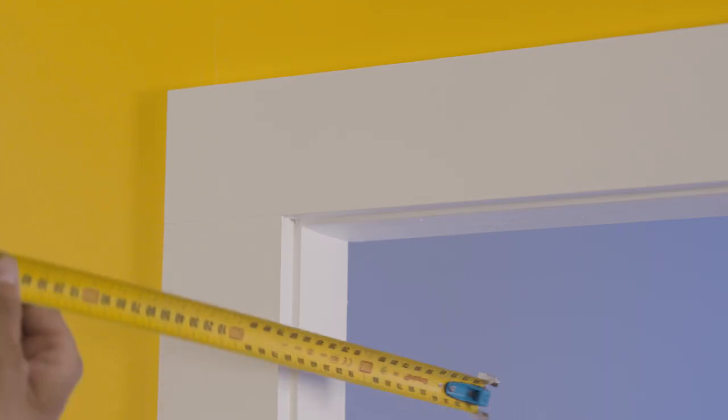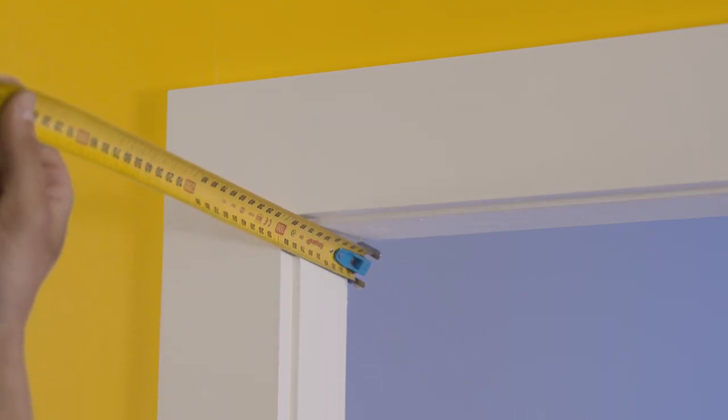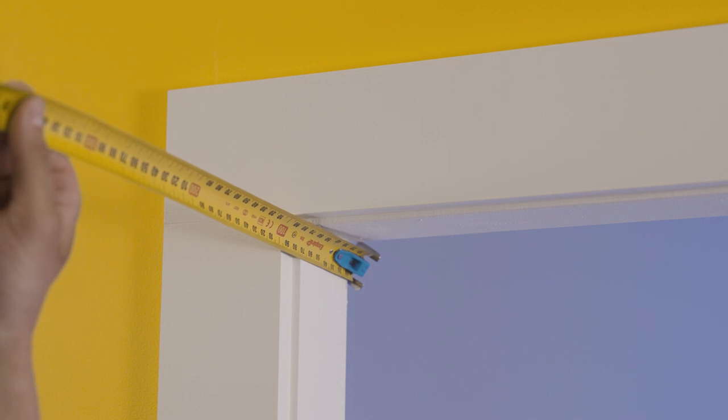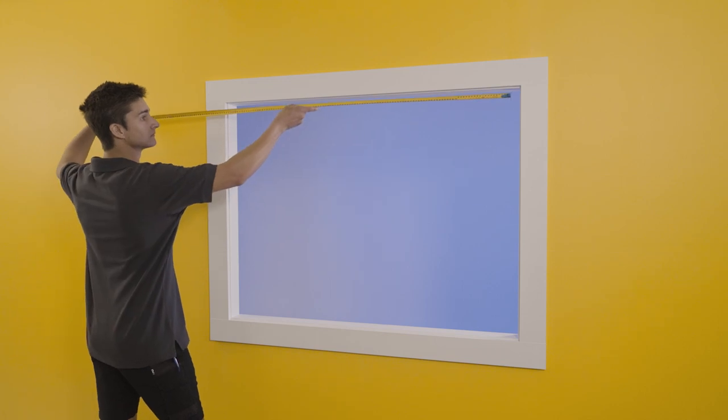Now for the reveal fit. Firstly, make sure you have at least 50 millimetres of depth in your reveal to ensure your new blind will sit neatly inside the window frame. When measuring for a reveal fit, it's important that we make sure the blind will fit inside your window frame, so we need to check how square your frame is.